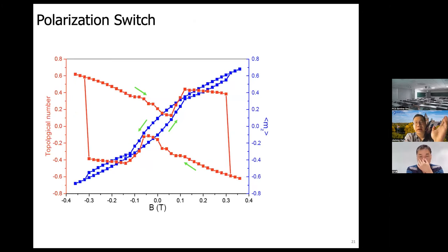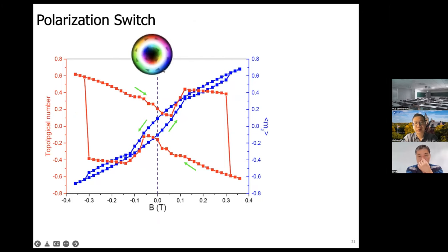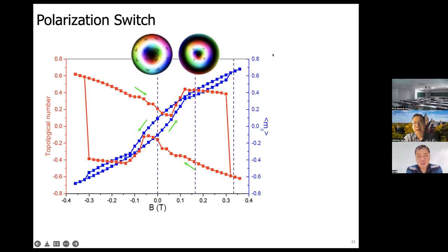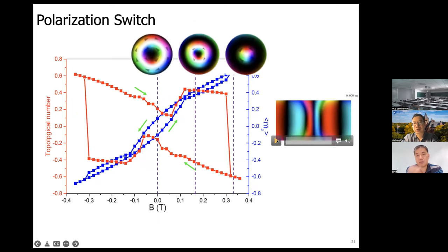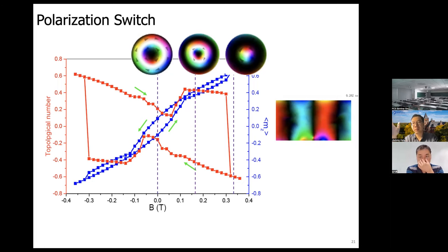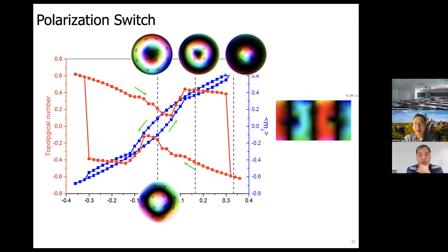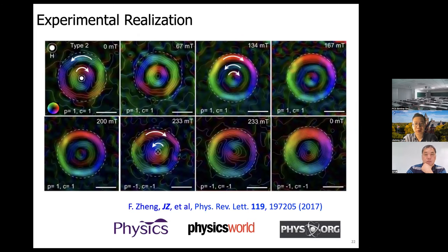This was experimentally confirmed with two configurations of opposite polarization discovered. One can switch from one type of skyrmionium to the other by gradually turning on a magnetic field — the skyrmionium detaches from the boundary, then further increasing the field collapses it to a conventional skyrmion. A lateral view shows a pair of monopole and anti-monopole (Bloch points) created and pushed toward opposite surfaces, and then turning off the field yields a skyrmionium of opposite polarization.